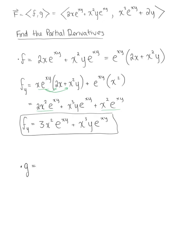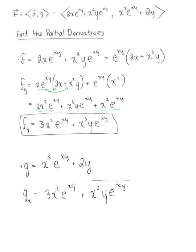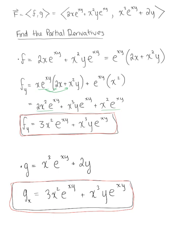Now for g, our g component is x cubed times the natural exponential raised to the xy, plus 2y. Finding the partial derivative of g with respect to x, we again need a product rule. This gives us 3x squared times the natural exponential raised to the xy, plus x cubed multiplied by y times the natural exponential raised to the xy. We can see that they are equivalent — the partial derivative of f with respect to y is the same as the partial derivative of g with respect to x.